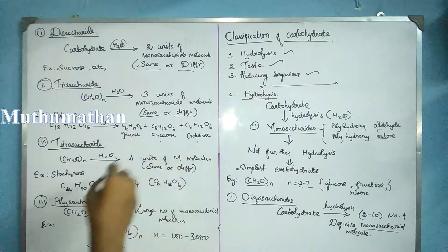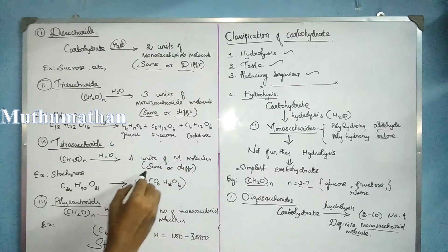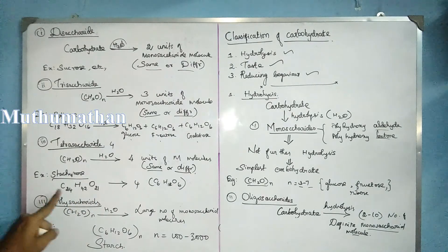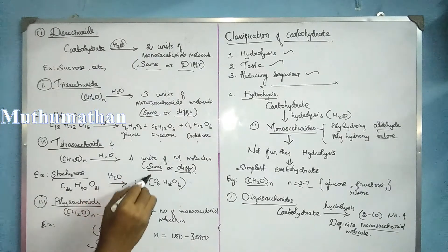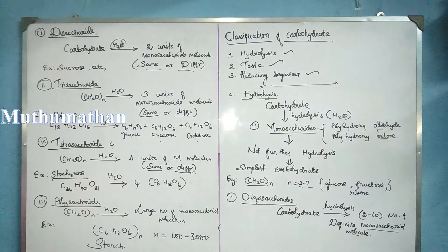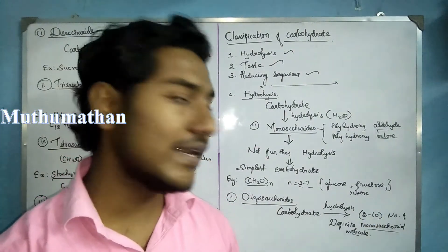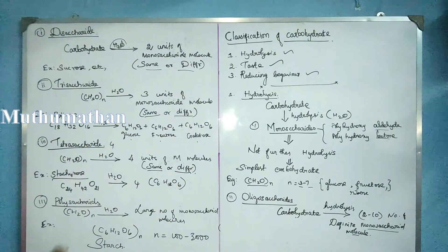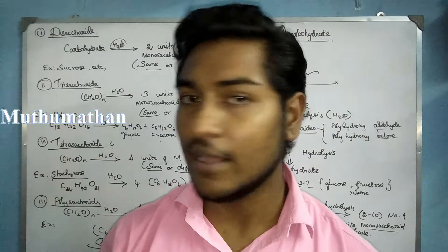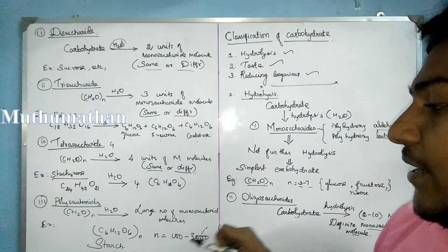We can classify carbohydrates further by their structure. The next type is tetrasaccharides — 'tetra' meaning four. On hydrolysis, tetrasaccharides give four units of monosaccharides, such as glucose, fructose, and galactose. For oligosaccharides, we have 2 to 10 monosaccharide units. Beyond 10 units, we have polysaccharides. On hydrolysis, polysaccharides yield many monosaccharide units.